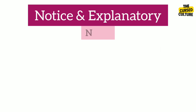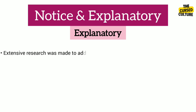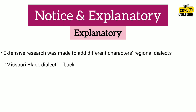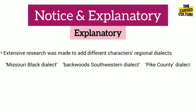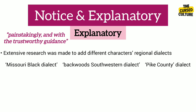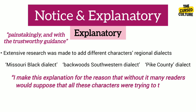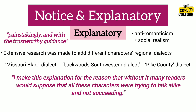The second statement is the explanatory, which declares that extensive research was made to incorporate the different characters' regional dialects, such as the Missouri Black dialect, the backwoods-southwestern dialect, and the ordinary Pike County dialect. Twain assures readers these dialects were researched painstakingly. The explanatory not only dares the reader to contest him on knowledge of the south, but also validates the notion that the novel is rooted in anti-romanticism and social realism.